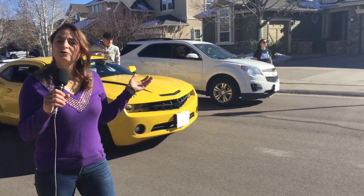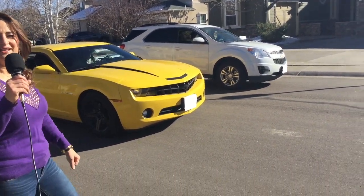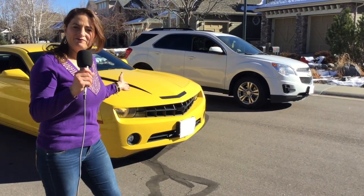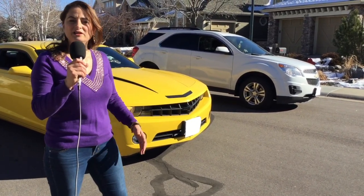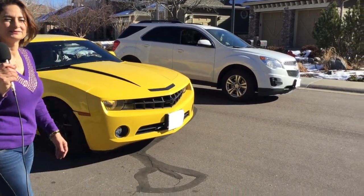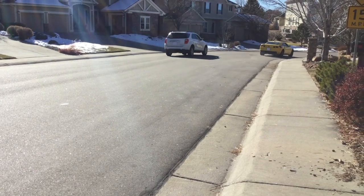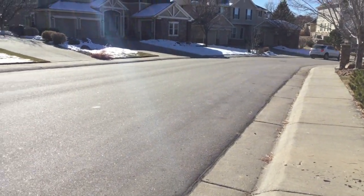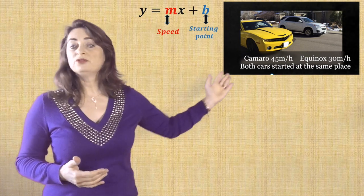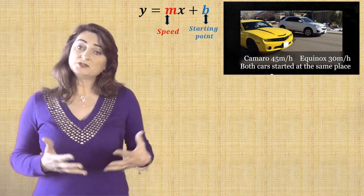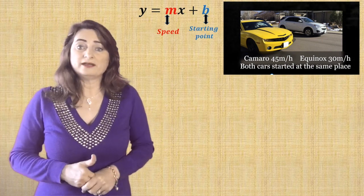Here's the first scenario: the Chevy Camaro, where Jacob is driving it, is going 45 miles per hour, and the Chevy Equinox is going 30 miles per hour. Let's see when they will meet. Both cars started at the same location. As you saw, the cars met only when they first started. After that, each one went at a different speed, so they never met again.